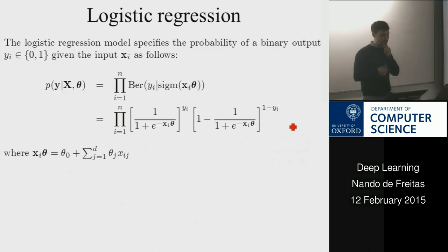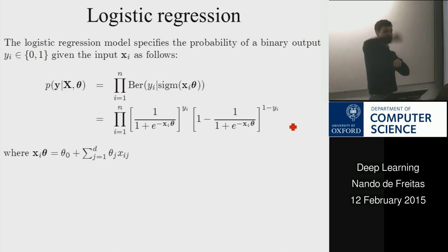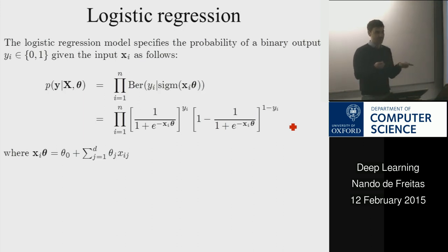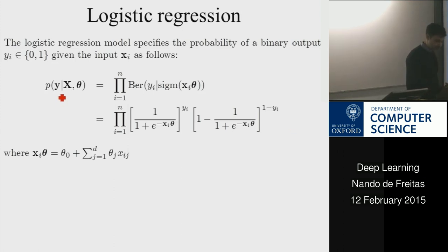We need this in order to define the loss function. What we're trying to do in learning is minimize uncertainty. For linear regression, the output was in ℝ, so a Gaussian distribution made sense. Now the predictions are either 0 or 1, so the right noise model is a Bernoulli. Points are still independent, so the probability of all outputs given all inputs is a product of Bernoullis.